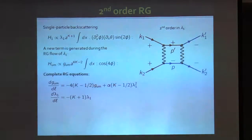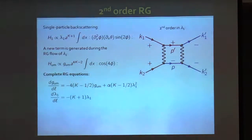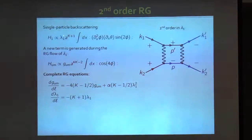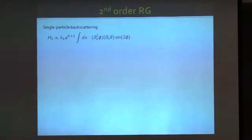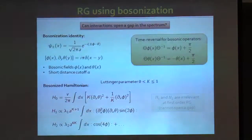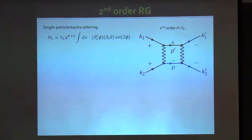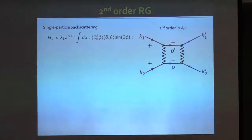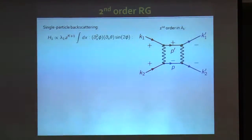This generated term again contains cosine 4phi, same as the umklapp term, but with a different cutoff dependence: A to the power 4K minus 2. The key point is that the simple umklapp scattering from fermions produces a term with this form but with a cutoff dependence making it irrelevant. The second-order scattering term has lower momentum dependence and therefore generates a term that becomes relevant under RG. The umklapp term from direct scattering contains k to the fourth power, i.e., four derivatives — two more than necessary — making it irrelevant, while the second-order process effectively removes two of those derivatives.